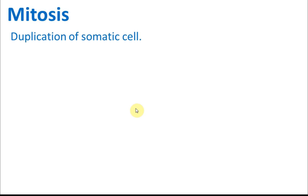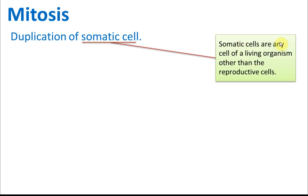Mitosis is a process of duplication of somatic cells — it is a cell division process for somatic cells. Somatic cells are any cells of living organisms other than the reproductive cells. Any cell which is not a reproductive cell is called a somatic cell.